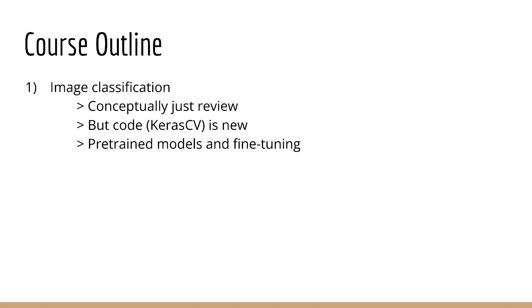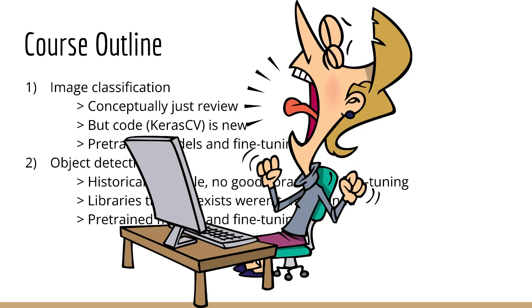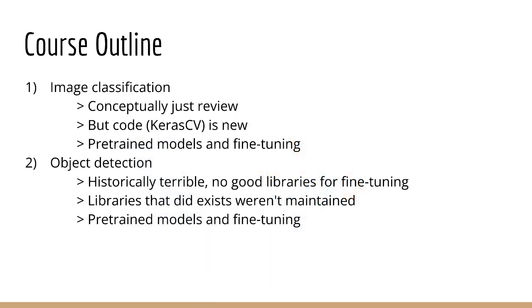This course is broken down into three main sections. The first section will look at image classification, which conceptually will be a review for most of you. However, even if you already know about image classification, this section is still important since it'll teach you how to use the Keras CV library, which is different from regular Keras. We will look at both how to use a pre-trained model and how to fine-tune a model on your own image dataset. The second section will look at object detection. Object detection used to drive me nuts because there were no good libraries that would let you do fine-tuning and be maintained over many years.